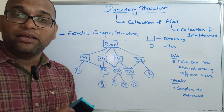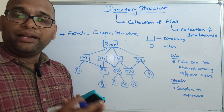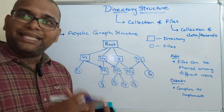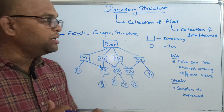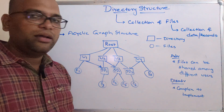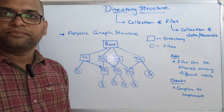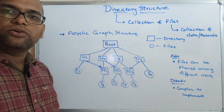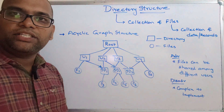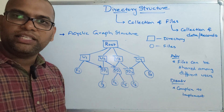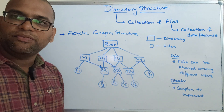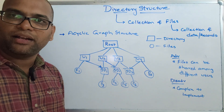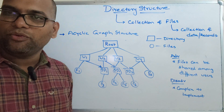So these are the four ways how directories can be structured to access files efficiently: single file directory, two-level directory, tree structure or hierarchical structure, and acyclic graph structure. I'll stop here. Hope you enjoyed the session — if you did, like and share it with your friends, and don't forget to subscribe to our channel. Thanks for watching!